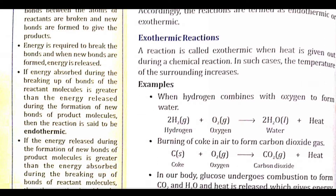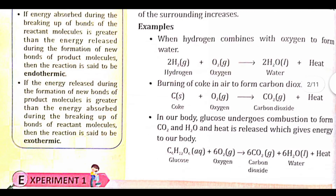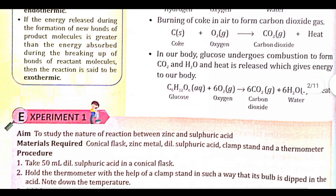An exothermic reaction is one in which heat is given out during the chemical reaction — the temperature increases. For example: 2H₂ + O₂ → 2H₂O + heat. Burning coke: C + O₂ → CO₂ + heat. In our body, glucose undergoes combustion: C₆H₁₂O₆ + 6O₂ → 6CO₂ + 6H₂O + heat. These are all exothermic examples.